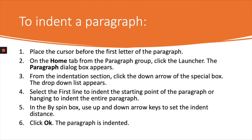To indent a paragraph, place the cursor before the first letter of the paragraph — you don't need to select the whole paragraph. On the Home tab, from the Paragraph group, click the launcher. The Paragraph dialog box appears. From the Indentation section, click the down arrow of the Special box. Select First Line to indent the starting point, or Hanging to indent the entire paragraph. Use the By spin box up and down arrows to set the indent distance, then click OK. The paragraph is indented.